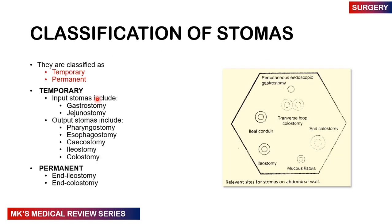There are different types of stomas. They can be classified as either temporal versus permanent. The temporal ones could be input stomas, which are used to put contents into the GIT, and output stomas, which are used as sources of output matter from the GIT. Input stomas include gastrostomy and jejunostomy. Output stomas include pharyngostomy, esophagostomy, cecostomy, ileostomy, and colostomy. The permanent ones are usually the end ileostomy and end colostomies.